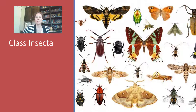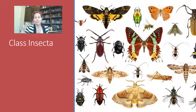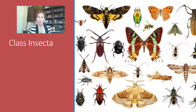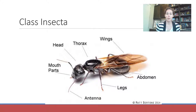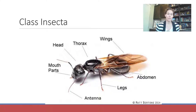Class Insecta is the most diverse class of all the arthropod classes and includes most of the arthropods that are plant feeders, agricultural pests, and medically important insects. What makes an insect different from all other arthropod classes is that they have three separate body regions: a head, a thorax, and an abdomen. On their head they have mouthparts and antennae; on their thorax is where their legs are attached.